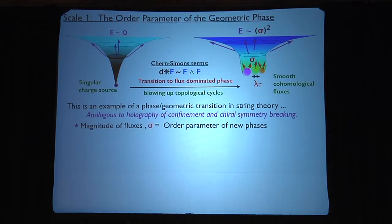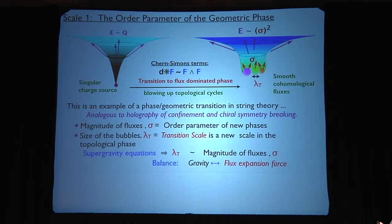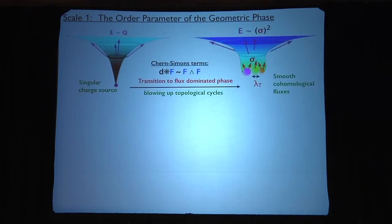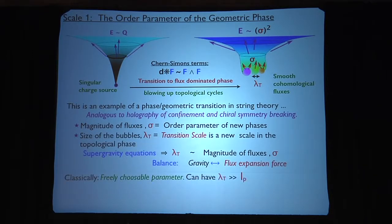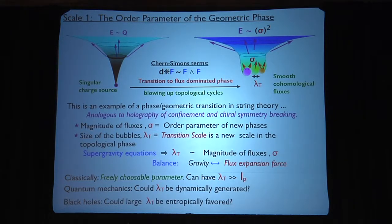And the magnitude of the fluxes through the cycles becomes the order parameter of the new phase. And in particular, for example, holographic descriptions of QCD, the fluxes are dual to things like gaugino condensate. There is also a scale, the size of the bubbles. I call it a transition scale, but it is a new scale that emerges in the topological phase. And you can think of it as basically something a bit like, well, in the holographic case, it can be the scale of chiral symmetry breaking through N=1 QCD. However, it is a new scale that emerges in this phase transition that I believe is at the bottom of black holes. And there's a relationship between the two scales. And classically, this scale is a freely choosable parameter. I have no idea where the quantum mechanics fixes it, we can't calculate that yet. But the thing we do know is that there are some rather arm-waving arguments, but plausible arguments, that suggest that large scales are actually probably entropically favored.